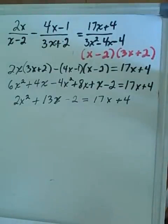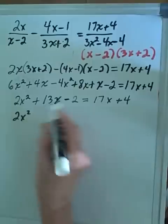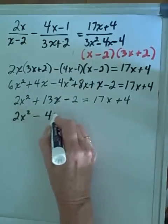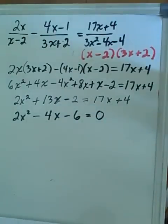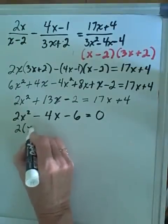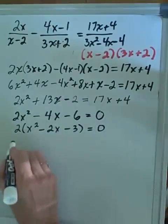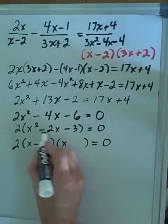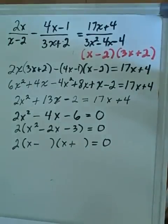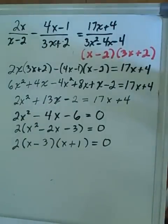We set the equation equal to 0 by moving 17x plus 4 to the other side: subtracting 17x from 13x gives negative 4x, and subtracting 4 from negative 2 gives negative 6. So we have 2x squared minus 4x minus 6 equals 0. We factor out the common factor of 2, giving x squared minus 2x minus 3 equals 0. Factoring the quadratic: we find two numbers that multiply to 3 and subtract to 2 — that's 3 and 1.